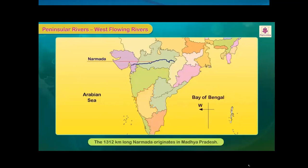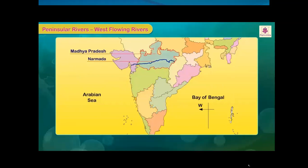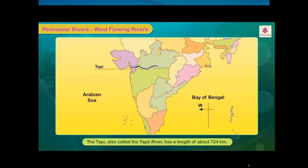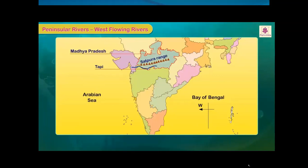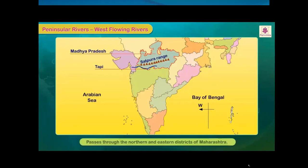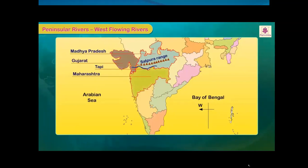Among west-flowing rivers, the 1,312 km long Narmada originates on the Amarkantak hill in Madhya Pradesh and flows through Madhya Pradesh and Gujarat before entering the Arabian Sea. The Tapti, also called Tapi River, has a length of about 724 km. This east-west flowing river emerges in the eastern Satpura Ranges in Madhya Pradesh, passes through Maharashtra and then enters Gujarat before meeting the Arabian Sea.